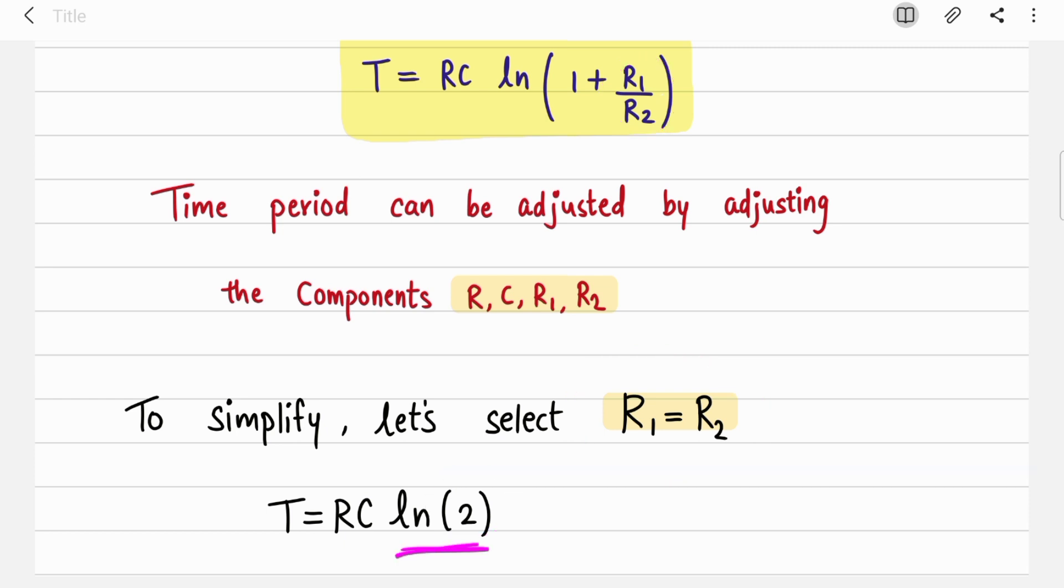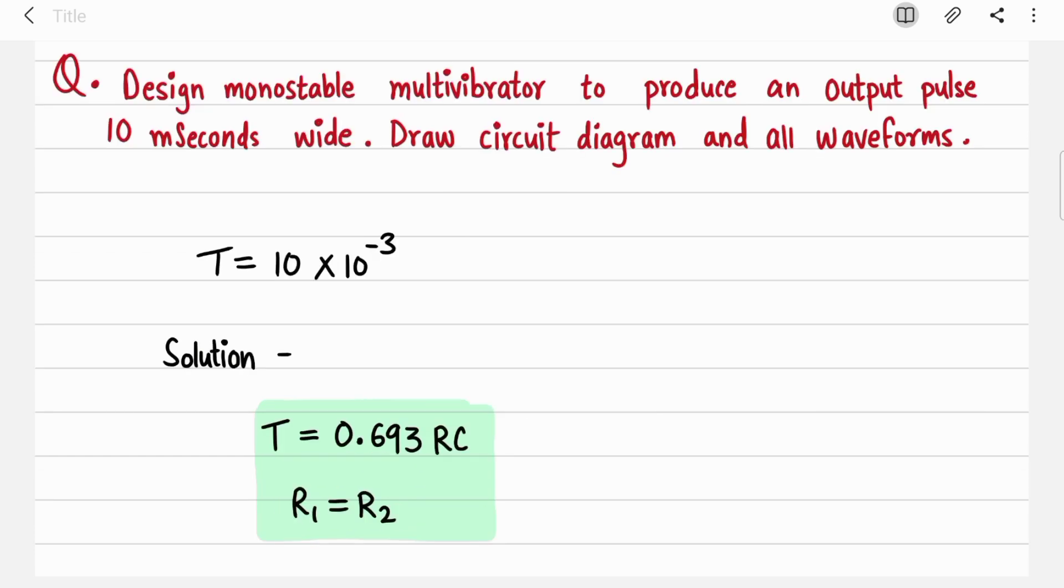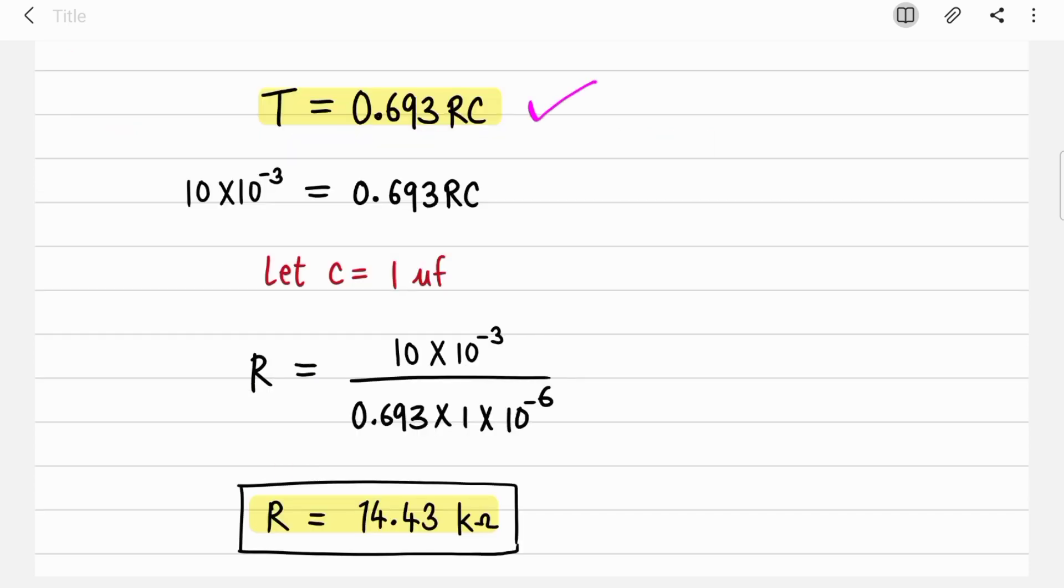If you find ln of 2 from calculator you will get 0.693. So your equation becomes T = 0.693 RC. And if you find out frequency, it will be inverse of T, which is 1.44 RC. So for design questions you will need this equation and R1 equal to R2. I have noted down these equations here. You have to start with the time period formula - time period is 10 milliseconds.